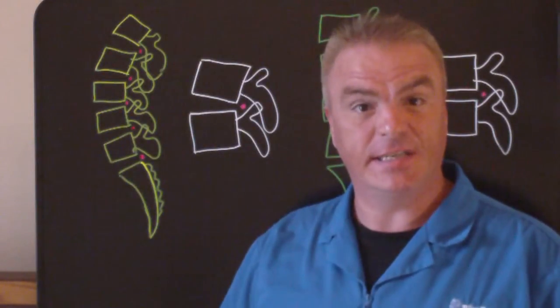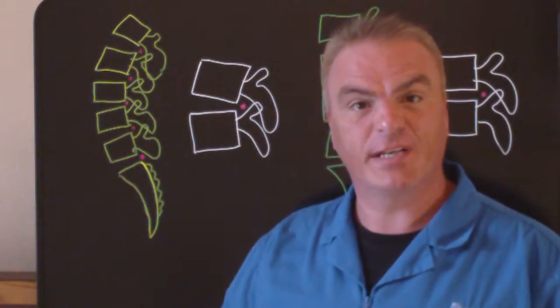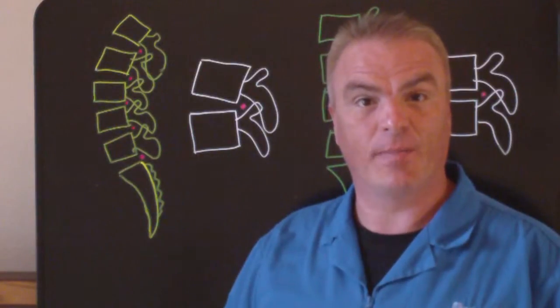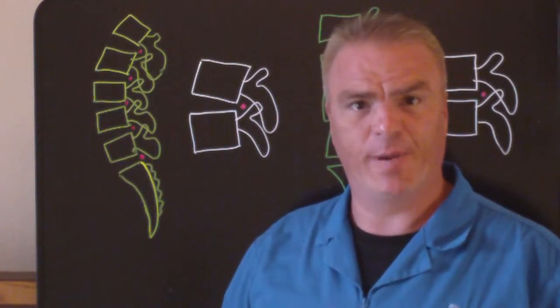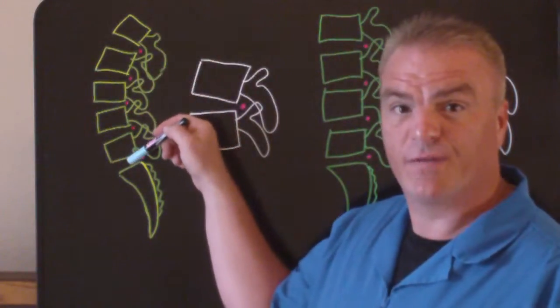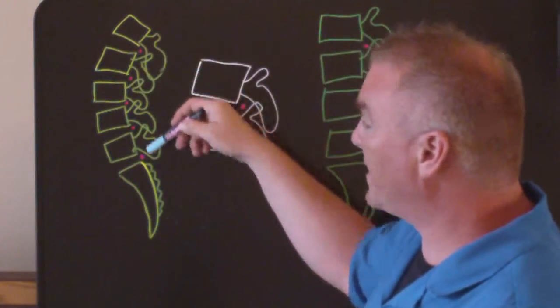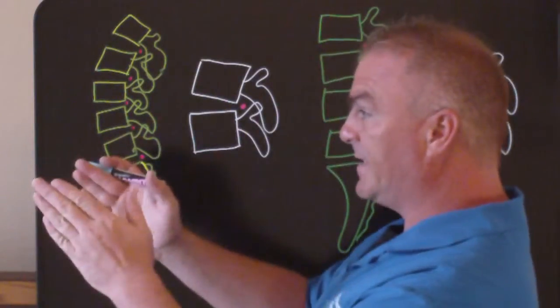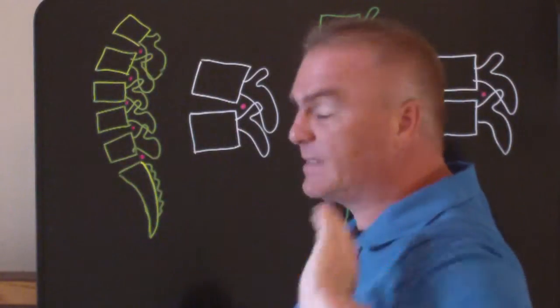Before we get into the disc bulge itself, I want to explain what normal anatomy is on our bodies and how we're designed to never have pain in our low back. What I've attempted to do here is draw a picture of the lumbar spine. Now, this would be in the lumbar spine as if we're facing this way, so we're looking in from the side.